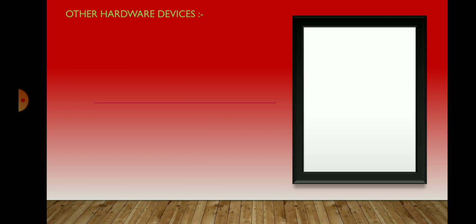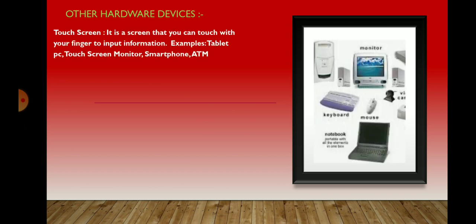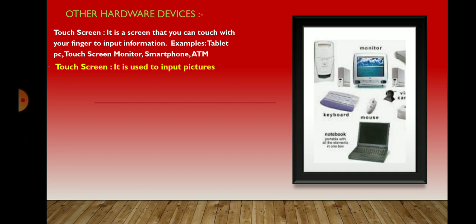Now let us see some other hardware devices. The first one is touch screen. A touch screen is a screen that you can touch with your fingers to input information. Examples of touch screen devices are tablet PC, touch screen monitor, smart phones, and ATM. Next is scanner. Scanner is an input device used to input pictures into the computer.